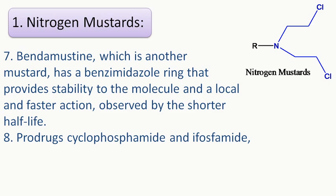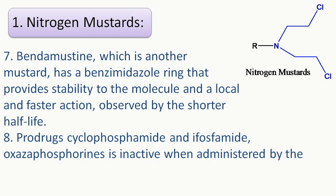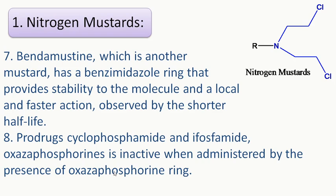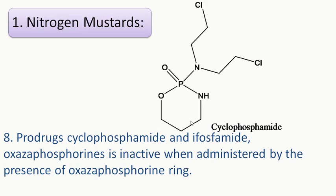Also in the nitrogen mustard class are cyclophosphamide and ifosfamide. These prodrugs contain an oxazaphosphorine ring — 'oxa' meaning oxygen, 'aza' meaning nitrogen, and 'phospho' meaning phosphorus — which makes them inactive when first administered. They must first be activated in the liver by certain enzymes to become active and act as anti-cancer drugs. Cyclophosphamide is a prodrug.